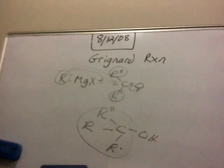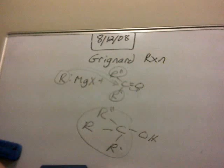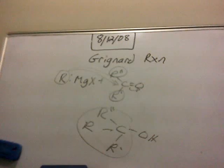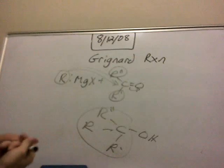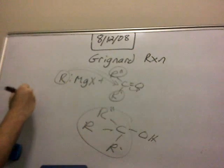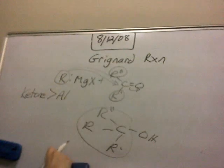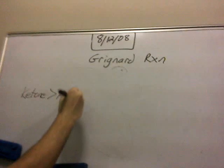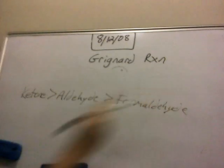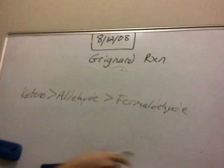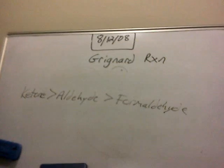So, Grignard reagent is essentially used for turning formaldehydes, aldehydes, and ketones into alcohols. I didn't talk about the reaction speeds, but ketones form alcohols faster than aldehydes, and they form alcohols faster than formaldehydes. So the order of reactivity goes: ketone, aldehyde, formaldehyde. In the next video, we're going to talk about turning esters into ketones, and then using Grignard reagent to form tertiary alcohols. Thank you for watching, and if you have any questions, write me back.